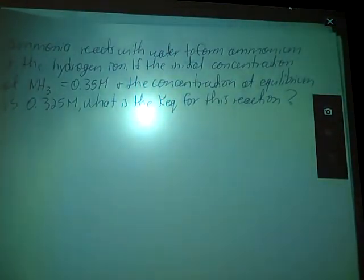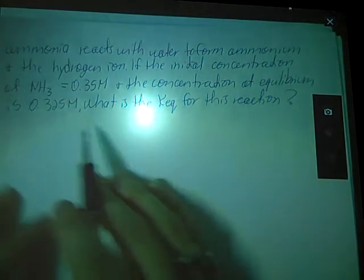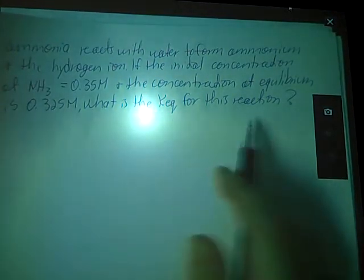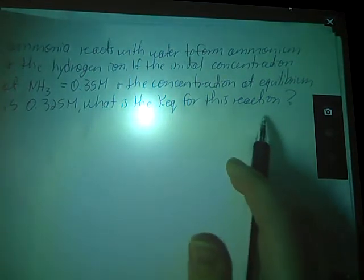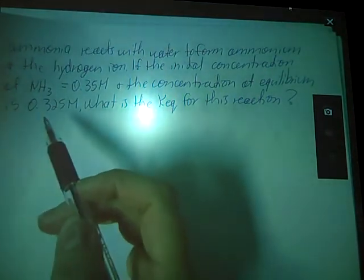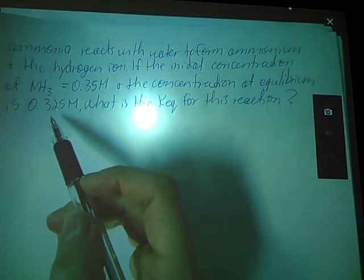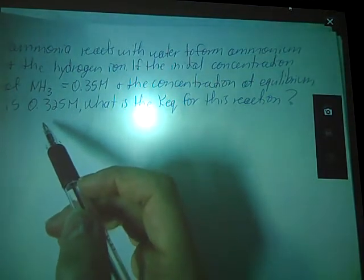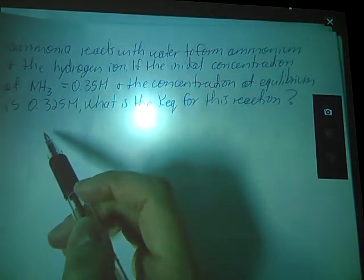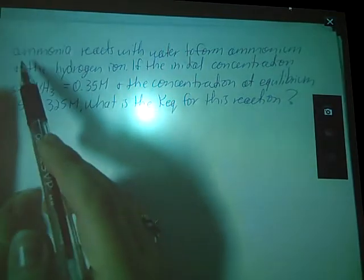Let's look at one in problem form. Ammonia reacts with water to form ammonium and the hydroxide ion. If the initial concentration of NH3 is 0.35 molar and the concentration at equilibrium is 0.325, what is the KEQ for this reaction? So I know I'm going to need ice tables because they only gave me one concentration at equilibrium. I need everybody's concentration at equilibrium.